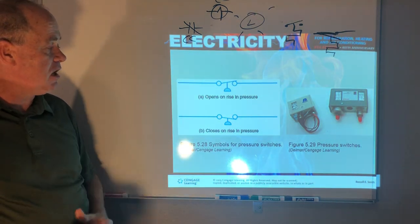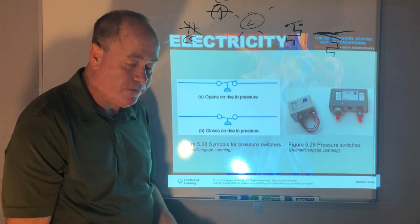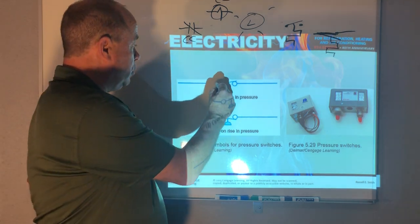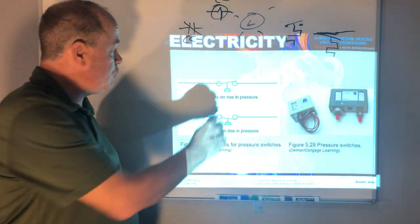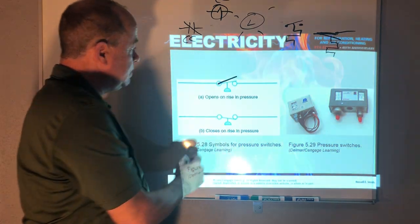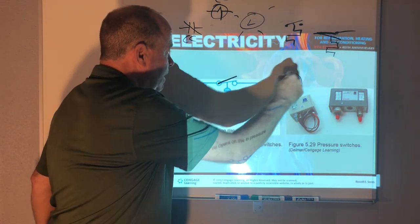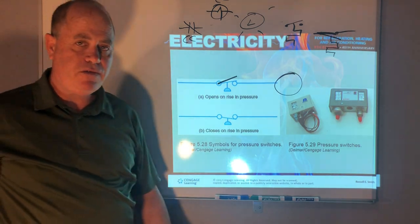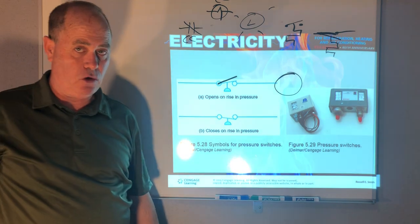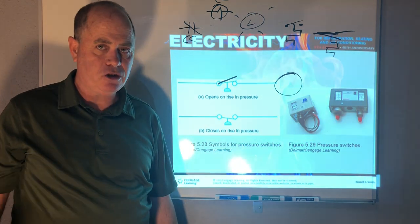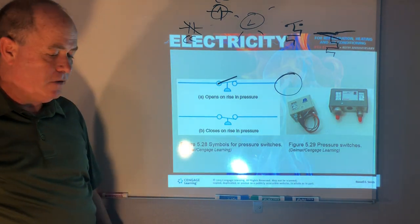And then this is your high pressure cutout. And this would open up if on a very hot day or you have a dirty condenser or the condenser fan motor goes bad and the pressure rises, it pops open and kills power that could feed the compressor or a contactor coil that then controls the compressor with a set of contacts.